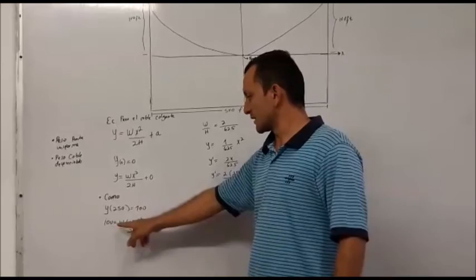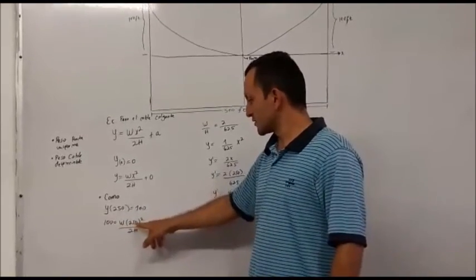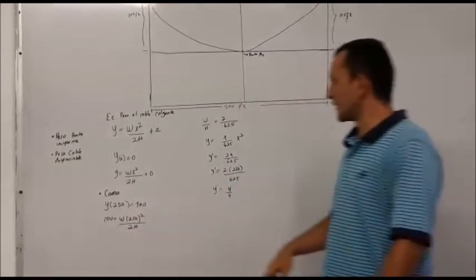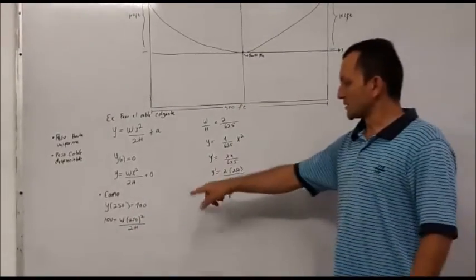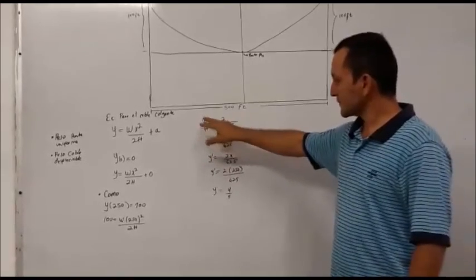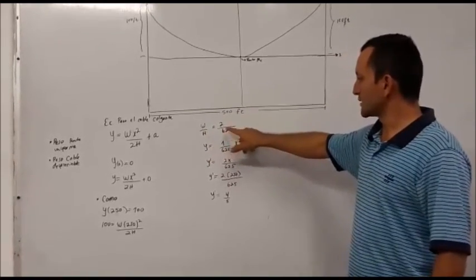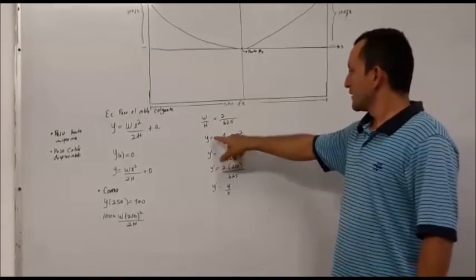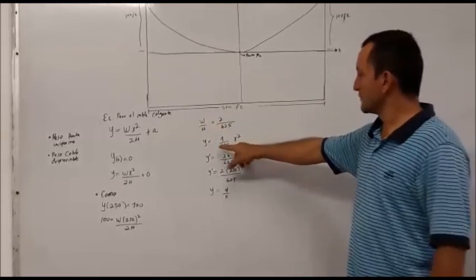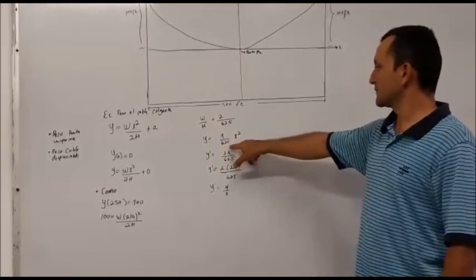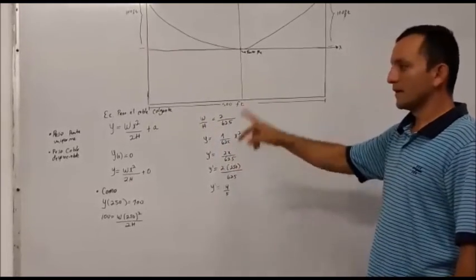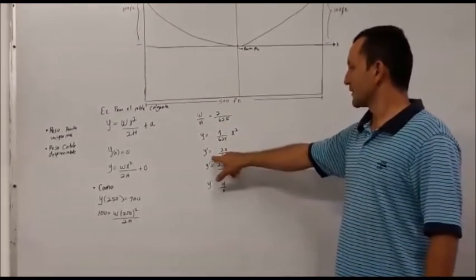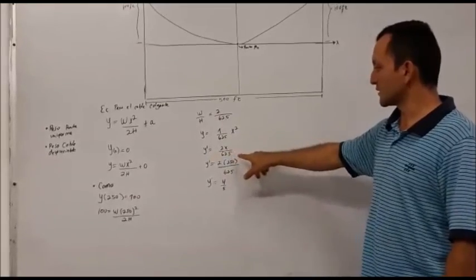Despejando, 100 es igual a W. Reemplazamos x igual a 250 al cuadrado sobre 2 veces la altura. Volviendo a despejar H y W, tenemos que W sobre H es igual a 2 sobre 625. Obtenemos reemplazando y: y es igual a 1 sobre 625 por x al cuadrado. Realizamos la primera derivada: y' es igual a 2x sobre 625.